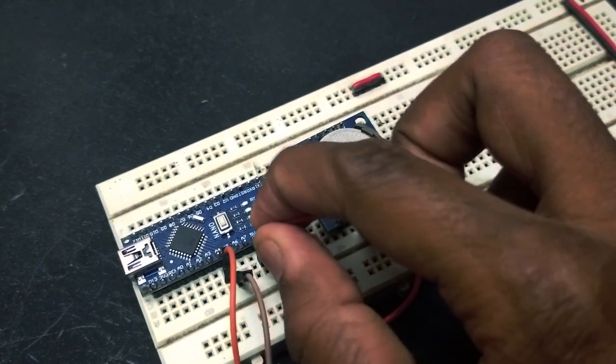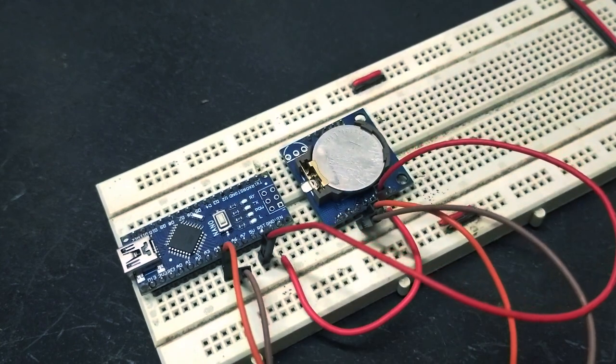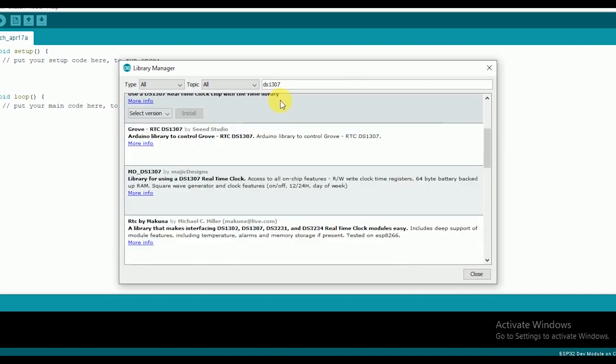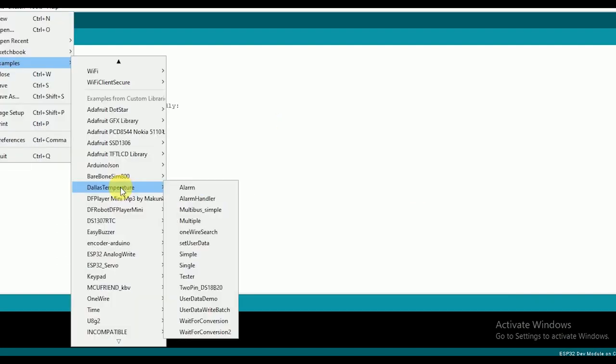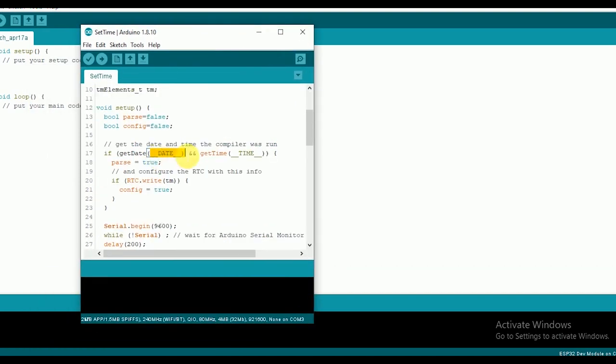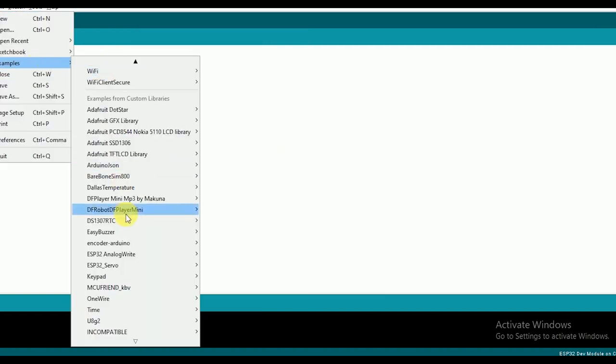When it's a brand new module, you have to set the time initially. Just download the DS1307 library from the library manager, open the set time example. This example will set the DS1307 RTC module to your system time. Hit compile and upload the code. Once this is done, you can read the date and time by using the read time example.